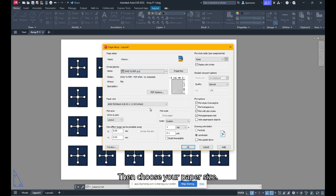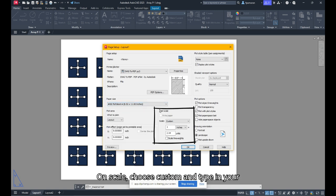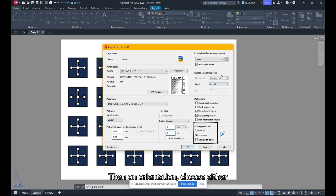Then choose your paper size. On Scale, choose Custom and type in your appropriate scale. This pattern is in centimeters, so it would be 1mm equals 0.1 unit. Then on Orientation, choose either Portrait or Landscape. Then click OK.